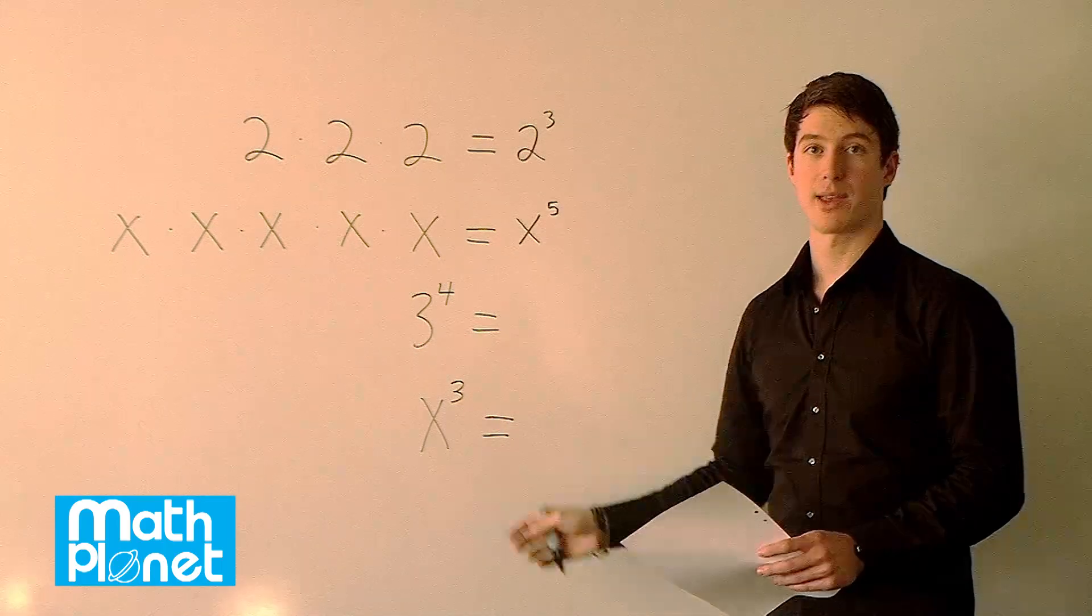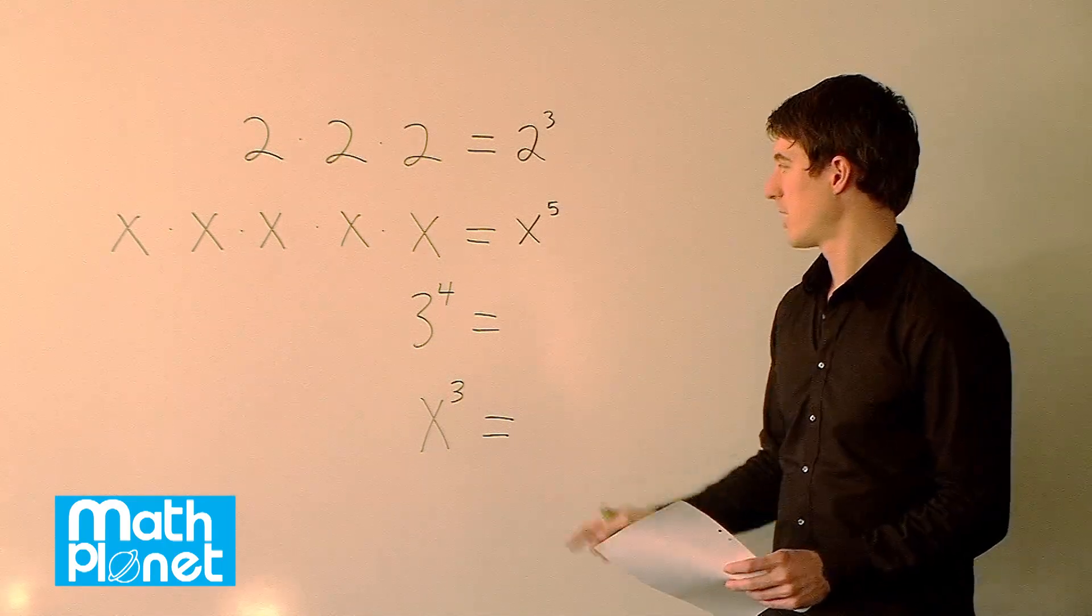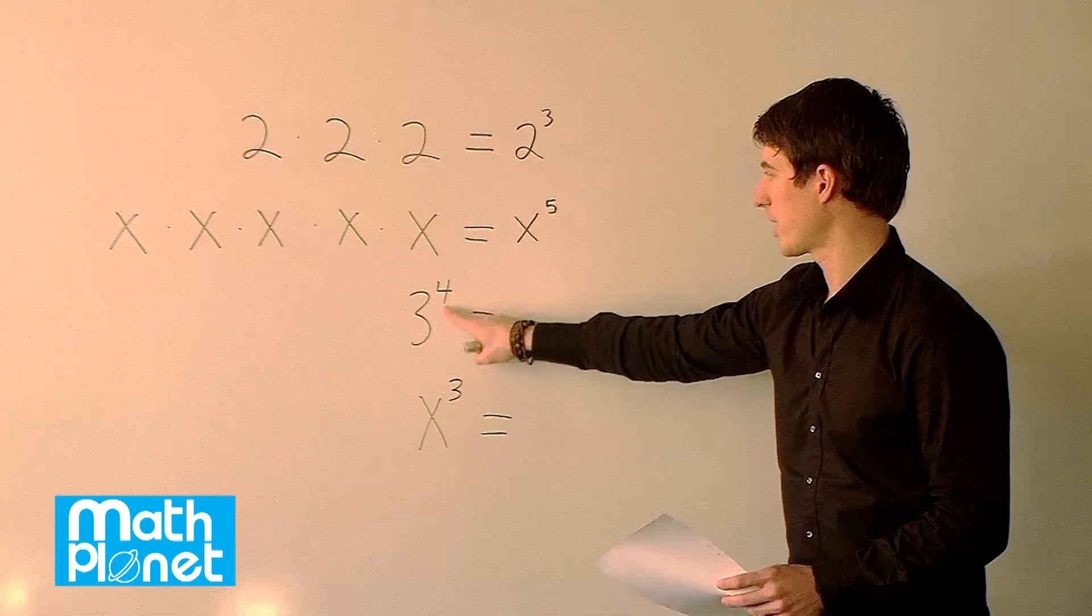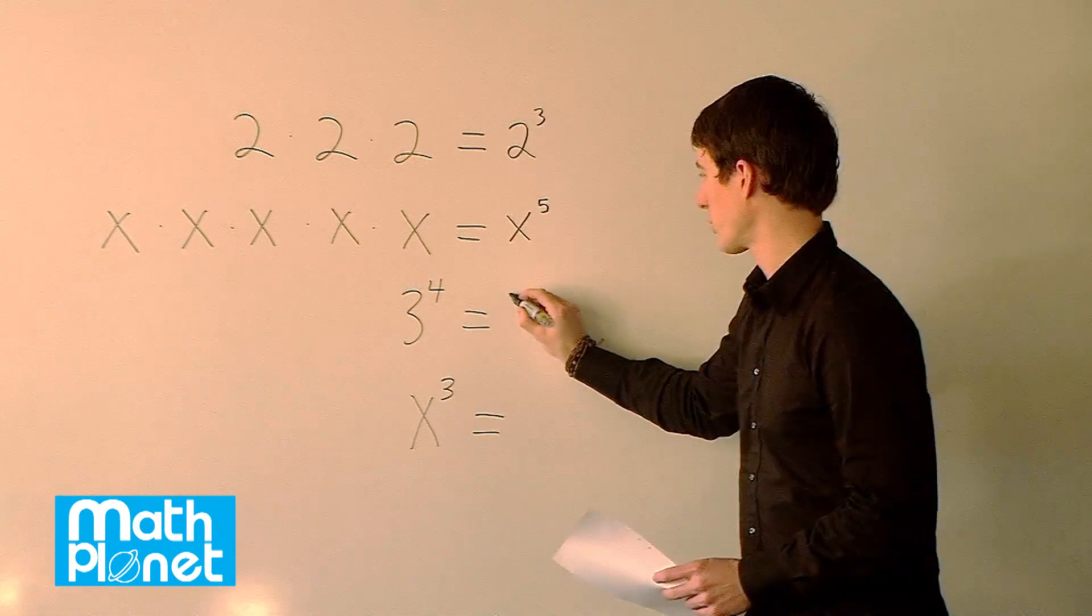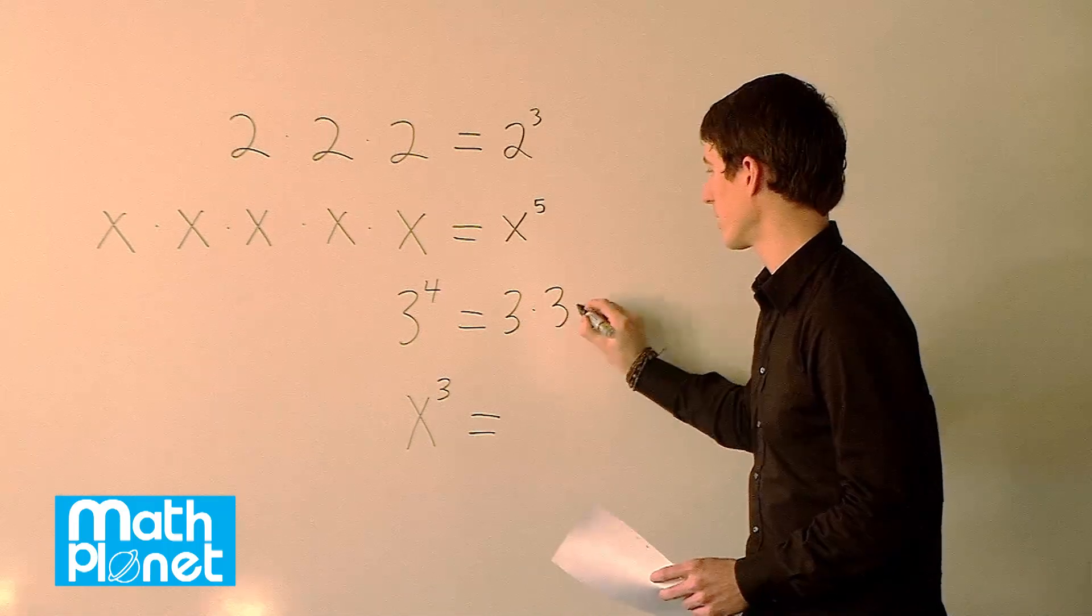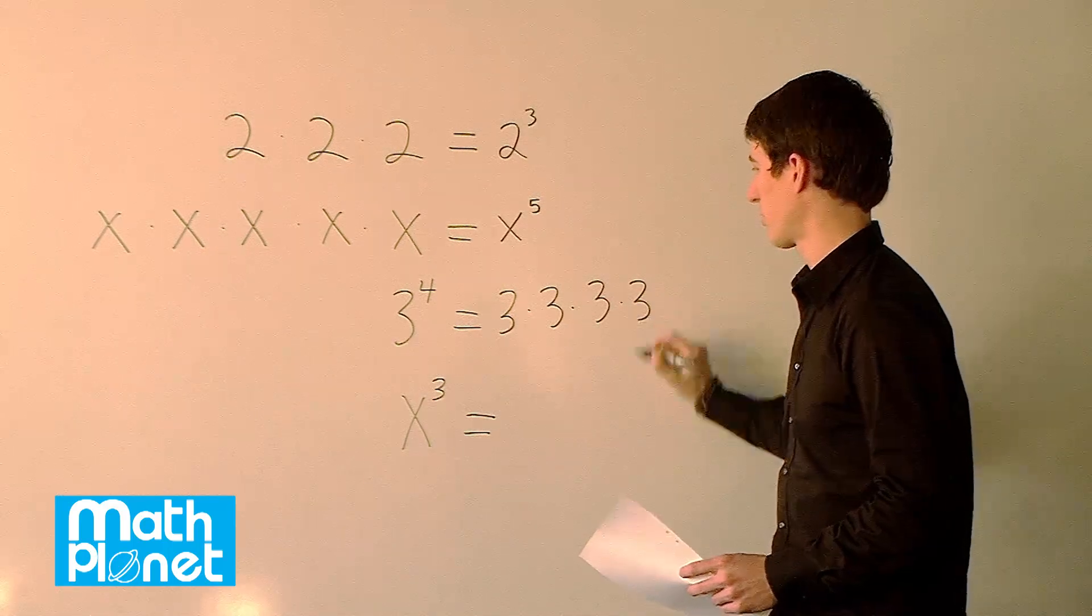Now let's look at these and expand them the other direction and see what we get. So this case we have 3 and there are 4 of them. So we just say 3 times 3 times 3 times 3.